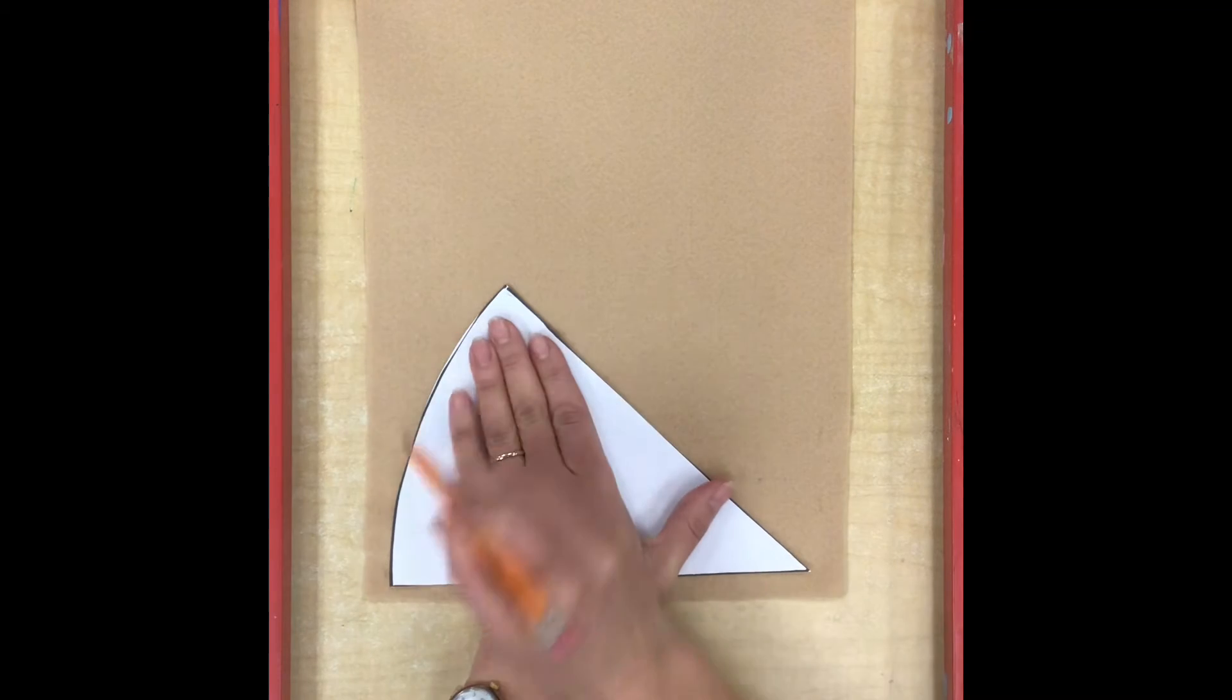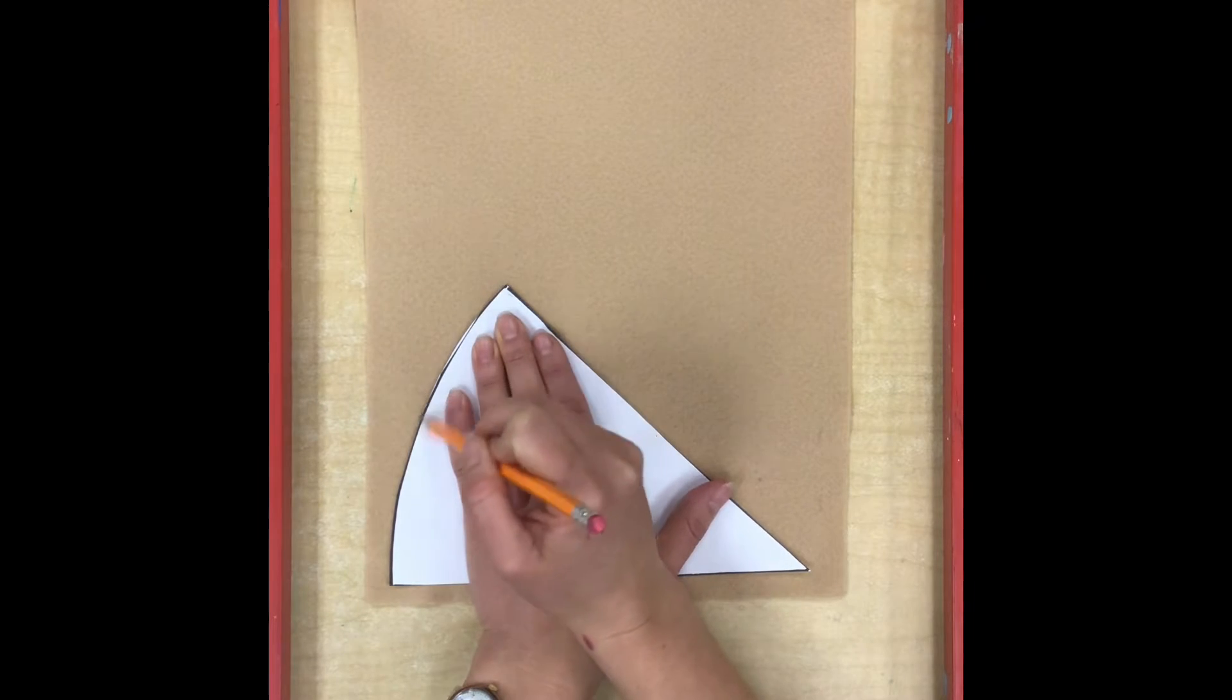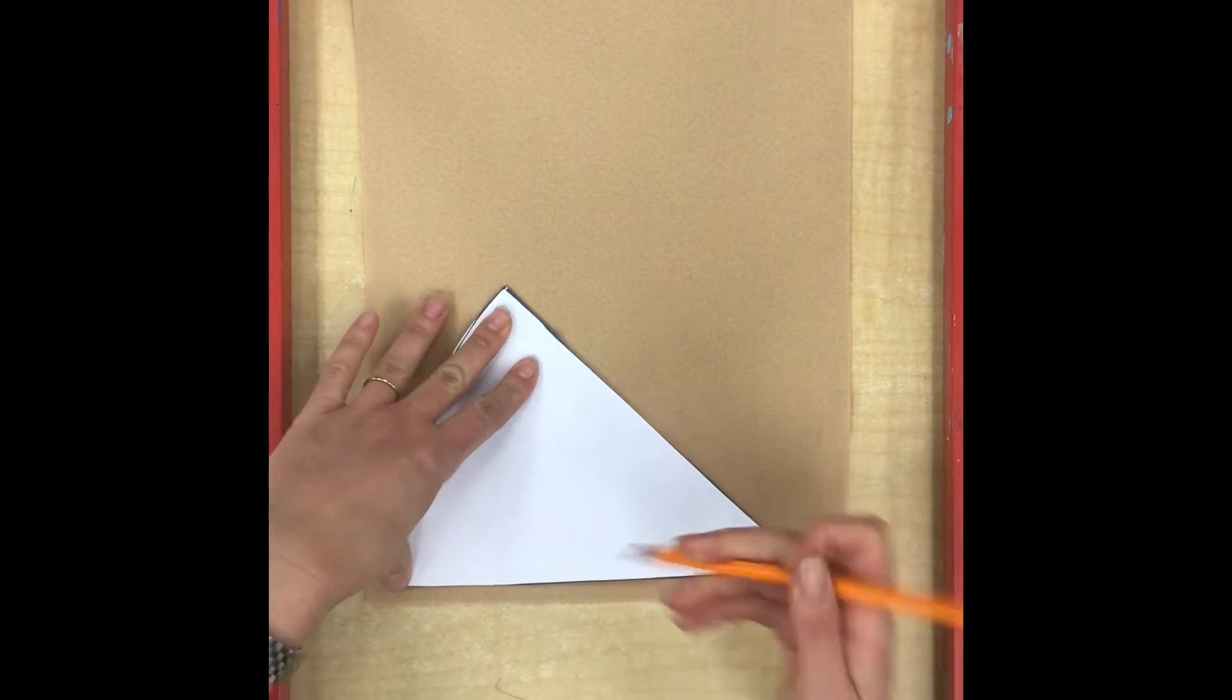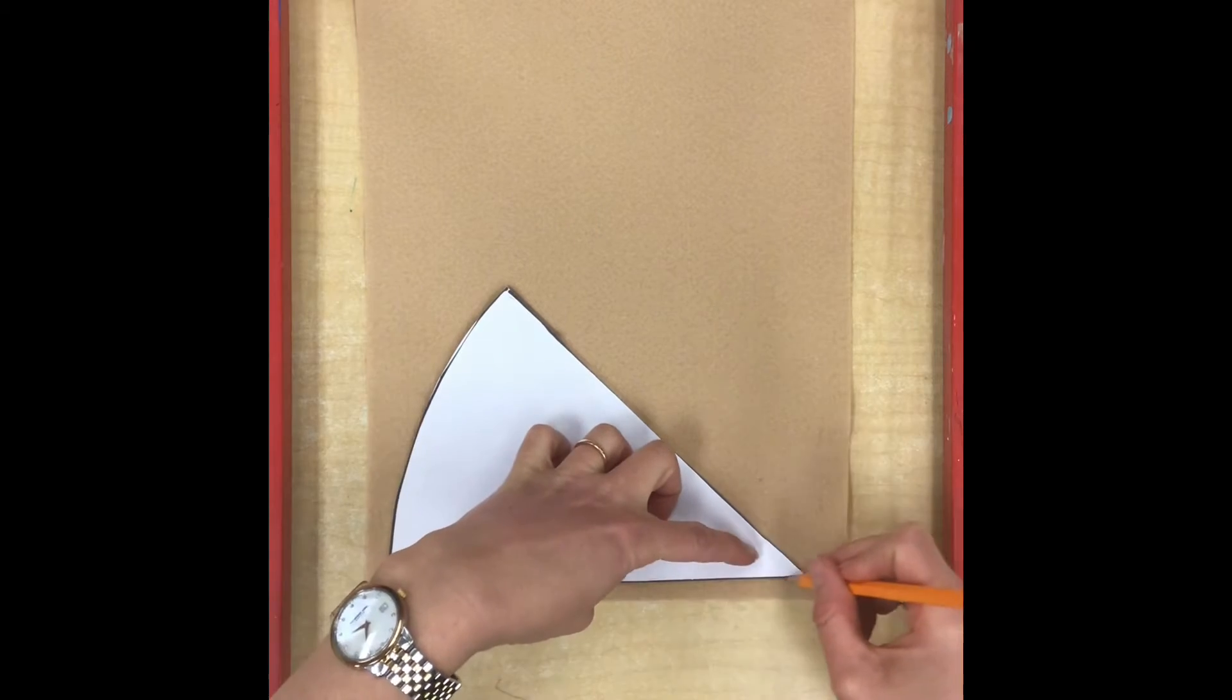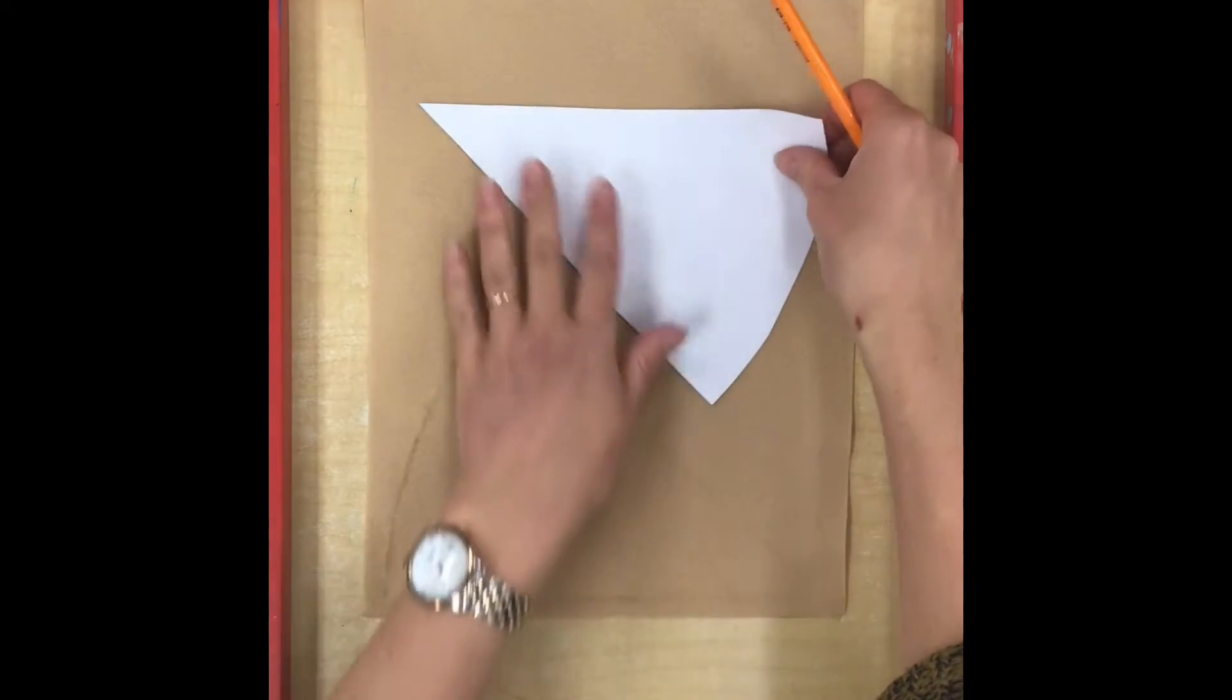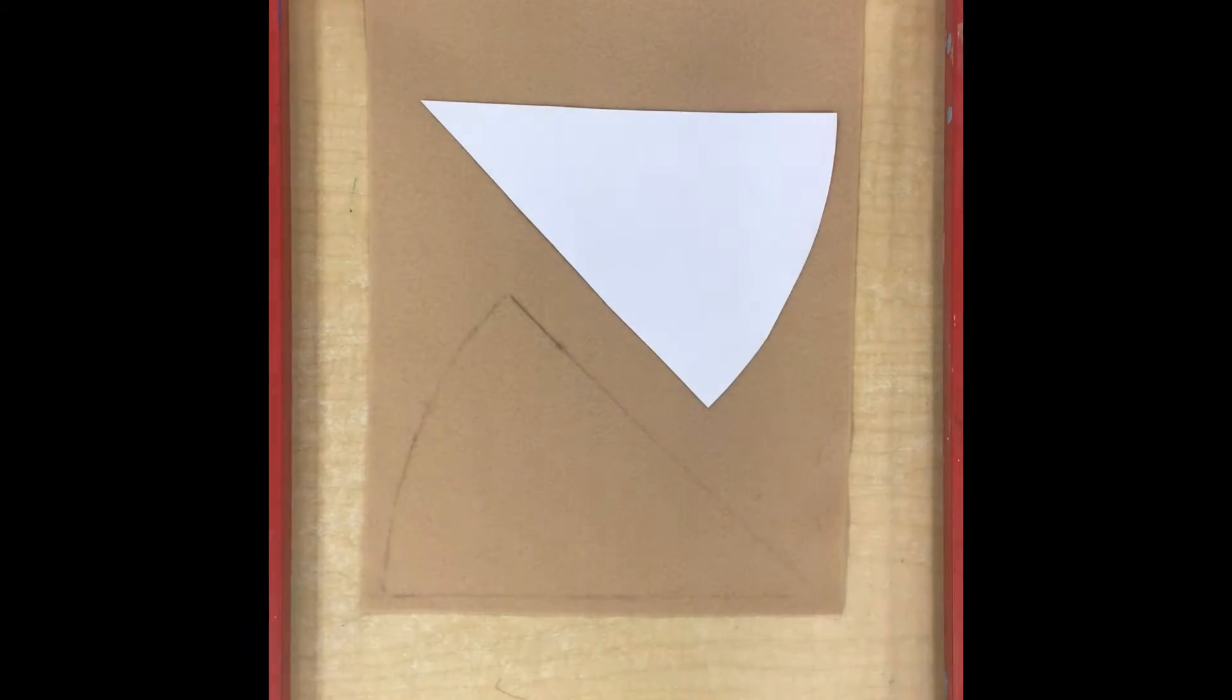The pencil doesn't show up really dark but that's actually a good thing because we don't want any dark lines to be visible on our felt after we cut this out. After I have one shape traced I can lay down the other shape and trace that one as well. When I have them both traced then I can cut them out.